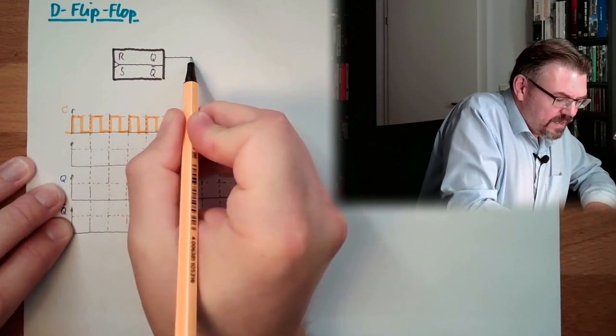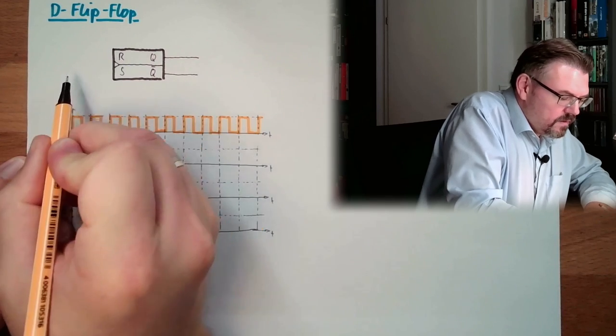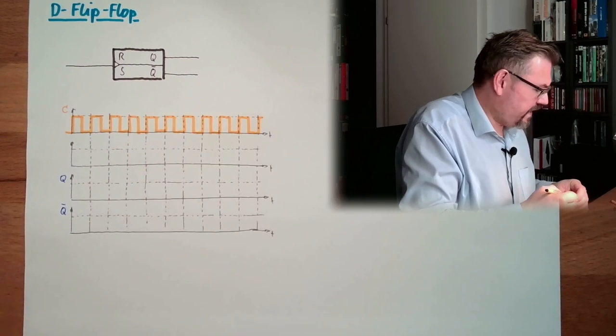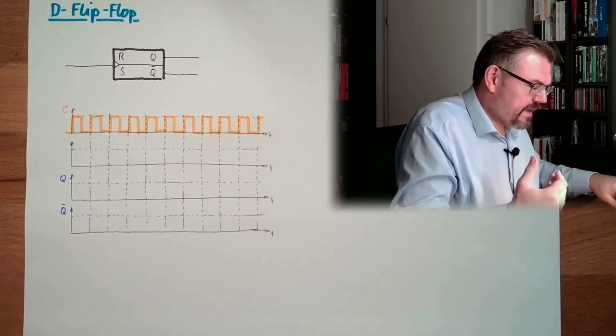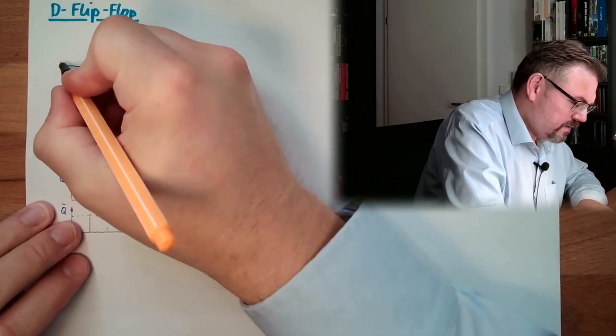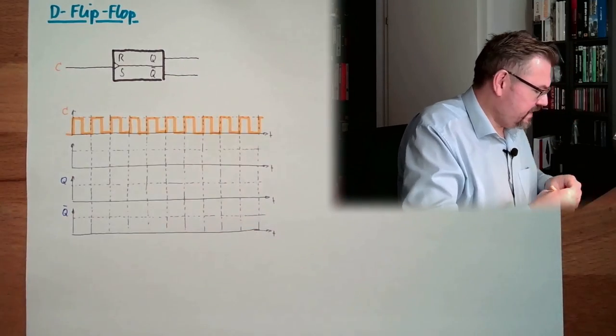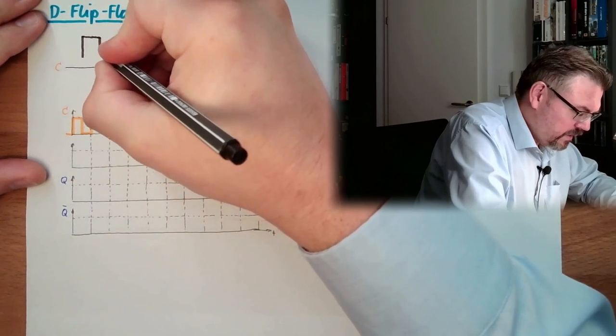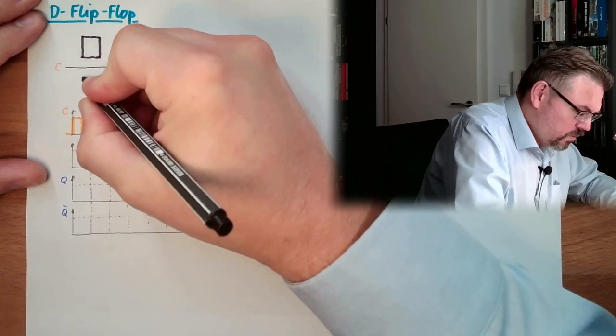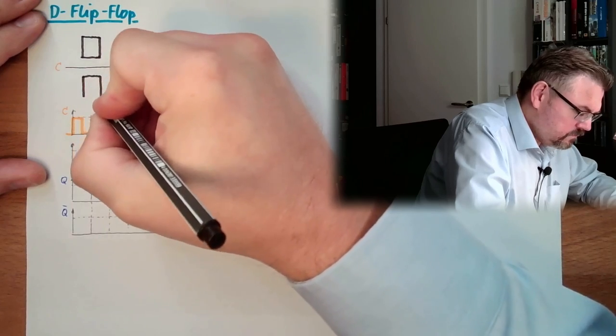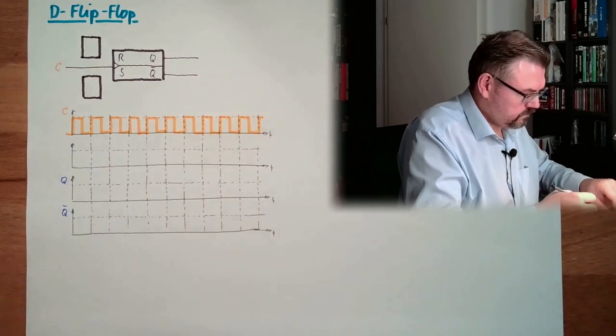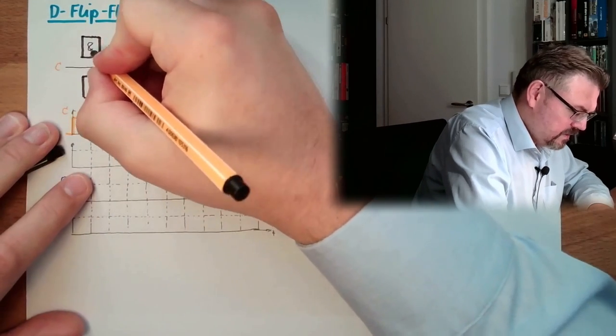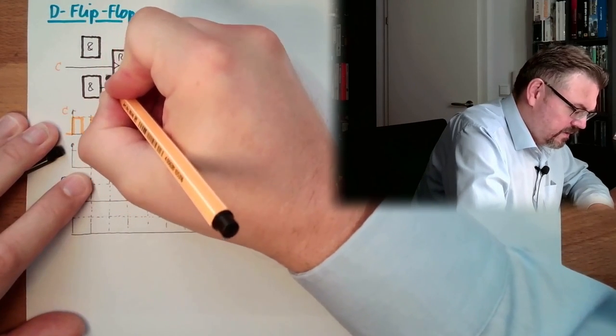And we have again the same, here's the C. We have again the same blocking mechanism for the feedback. We have again two ends, two end elements, which are blocking the feedback. These are the ends and these are fed into S and R.